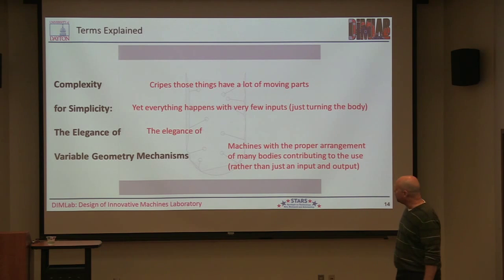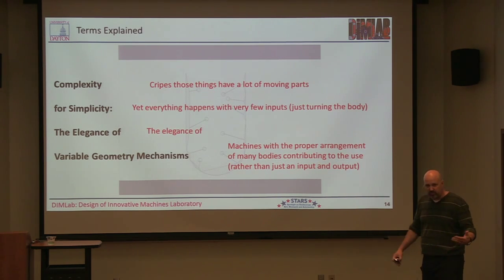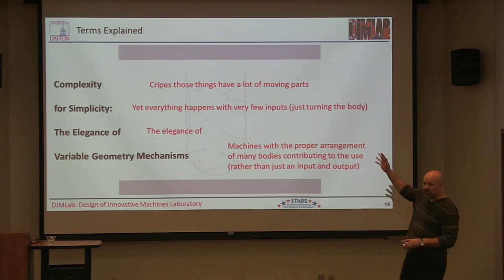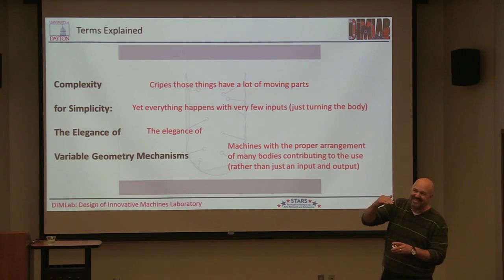But what we're after is being able to have systematic design approaches to doing these things. And so finally, variable geometry mechanisms. This doesn't have too clean of a definition, but it's machines with the proper arrangement of many bodies contributing to the use or purpose rather than just an input and an output. For example, the U and the D, there were many bodies along that chain that had to move from the U shape to the D shape for this thing to do the job.